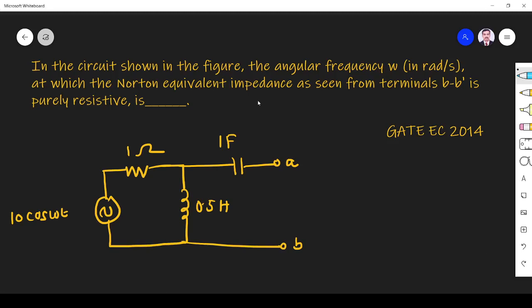Hi friends, in this video let us solve a circuit problem from the GATE EC 2014 paper. The question is: in the circuit shown in the figure, the angular frequency ω in radians per second at which...